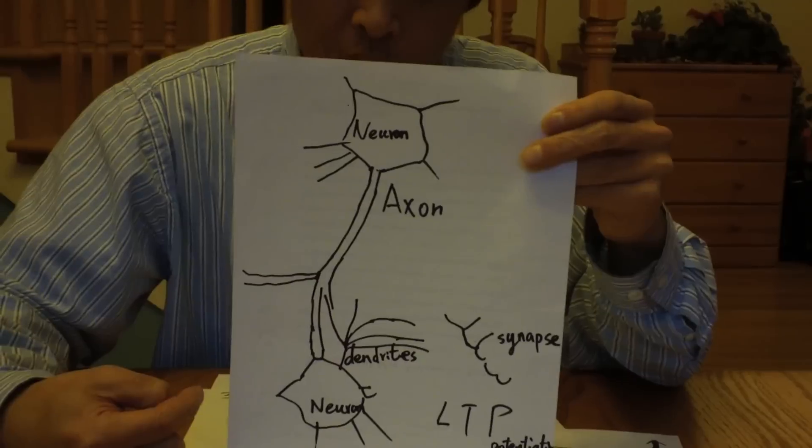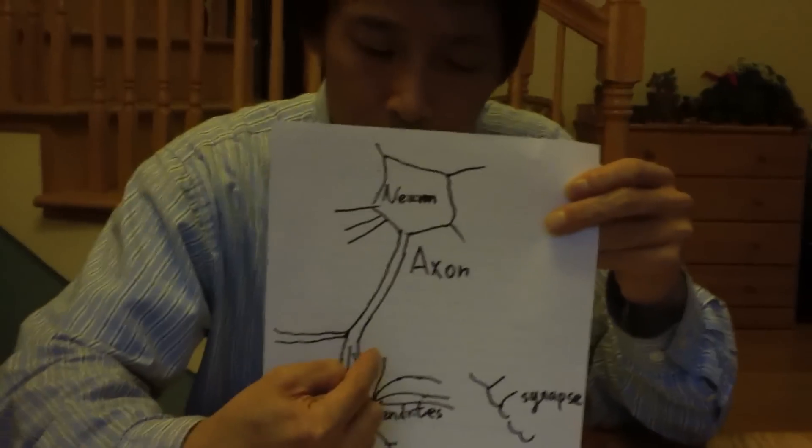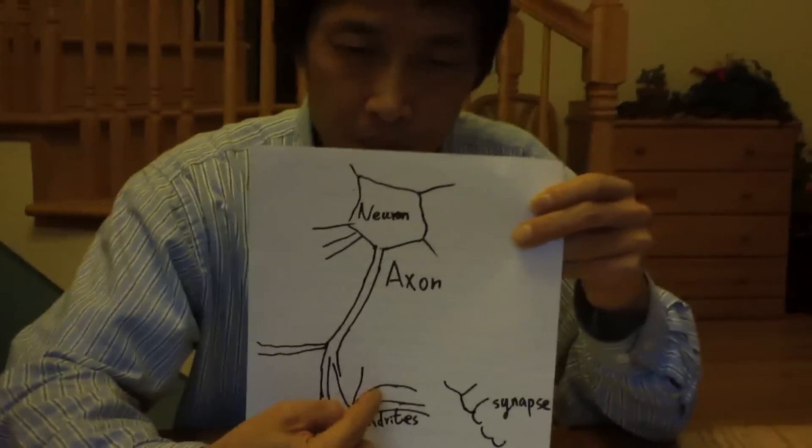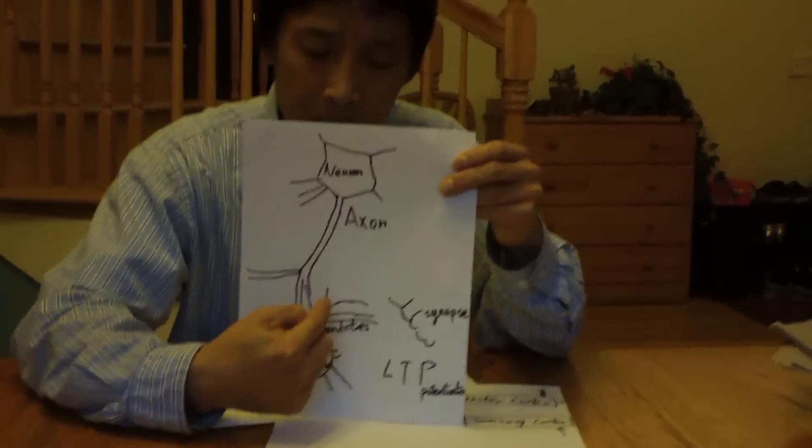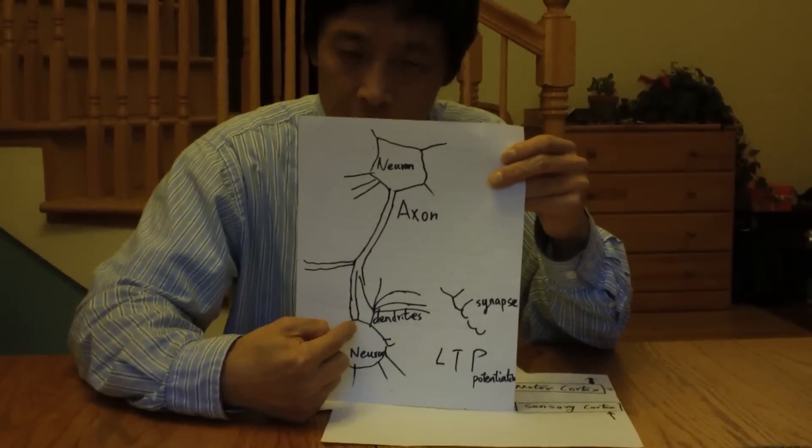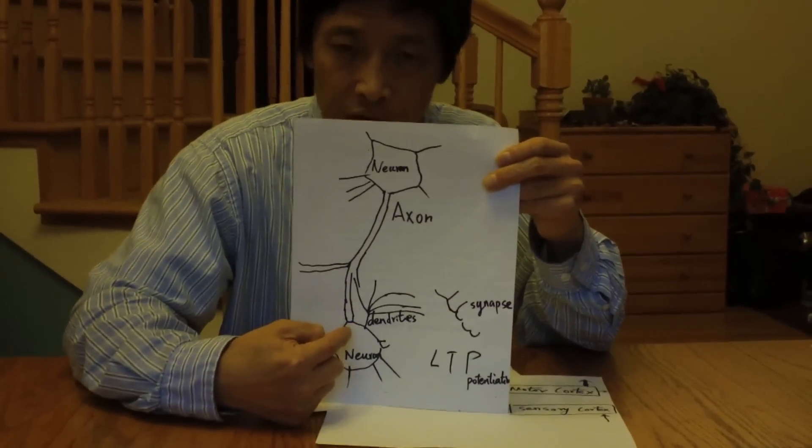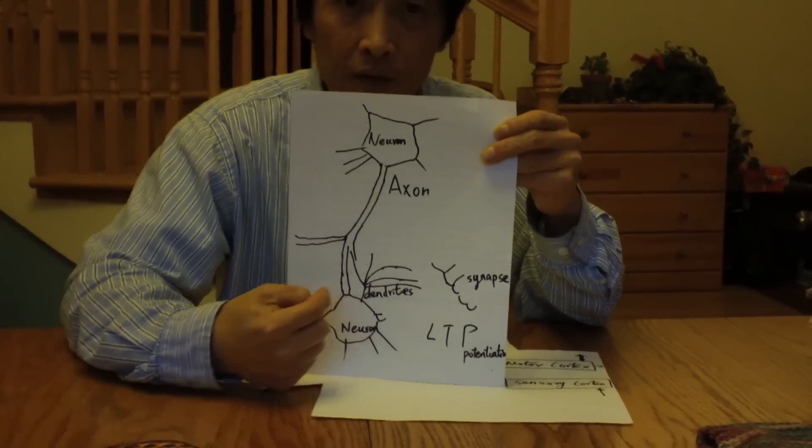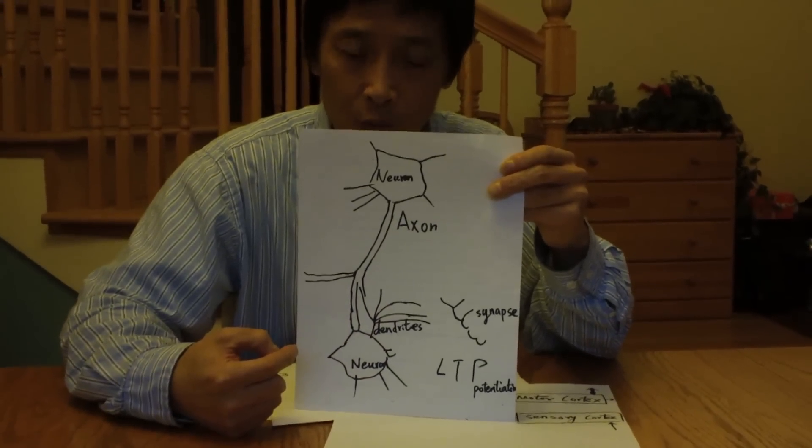When you do training, you are actually adjusting the synapses. The value of the synapse will determine whether this will fire. There's a threshold on each neuron. If the sum of the synapses is higher than the specific threshold, that neuron will fire.